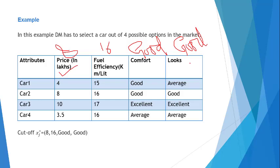For fuel efficiency, the cutoff value is 16. In this case, the decision maker will go for the car which has fuel efficiency of 16 or more than 16, because the higher the fuel efficiency, the better and more preferable the car will be. So 16, 17, 18 — at least 16 is the requirement.